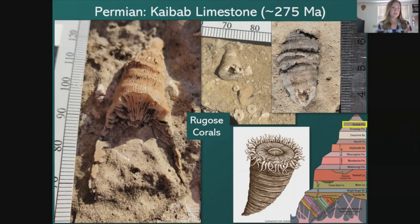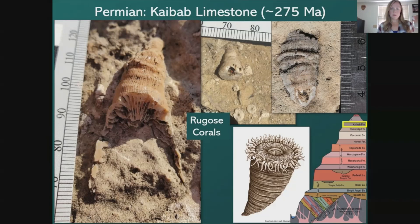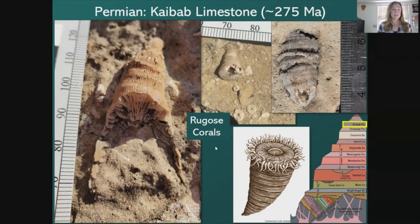Starting with rugose corals — these are an extinct group of corals with radiating septa visible inside. When alive, their pointed part was anchored into the seafloor sediment so that their tentacles faced upward to take in and feed on microscopic organisms. These rugose corals represent some of the last of their kind, as they all went extinct at the end of the Permian, about 250 million years ago.